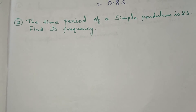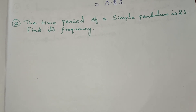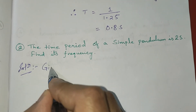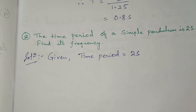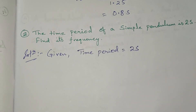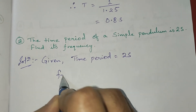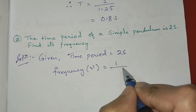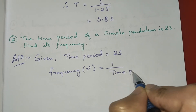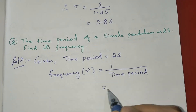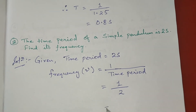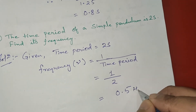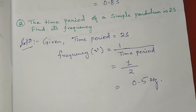The second question says the time period of a simple pendulum is 2 seconds. Find its frequency. The given time period T = 2 seconds. Frequency ν = 1 upon T = 1 upon 2 = 0.5. The SI unit is hertz, so the answer is 0.5 hertz.